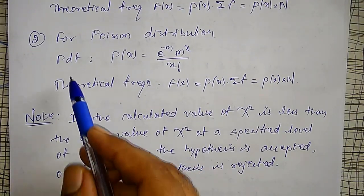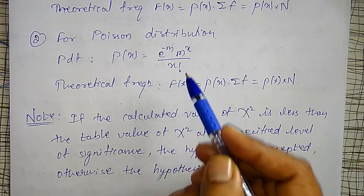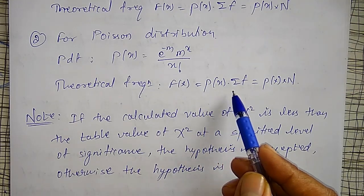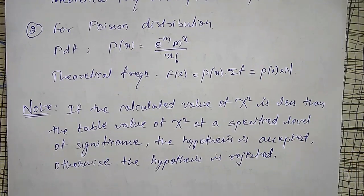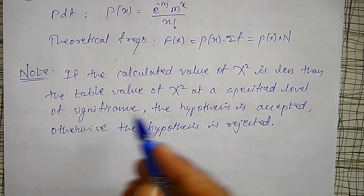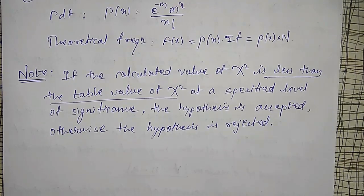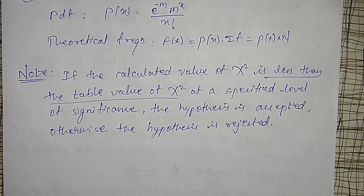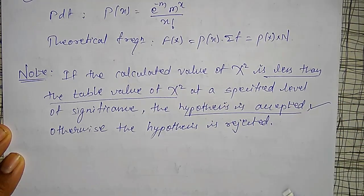For Poisson distribution, the theoretical frequency is P(x) into the sum of all frequencies (total number of observations). One important thing: if the calculated value of chi-square is less than the table value of chi-square, then with a specified level of significance — 5% or 1% level of significance (99% or 95% level of confidence) — the hypothesis is accepted. If the calculated value is greater than the table value, we reject it.